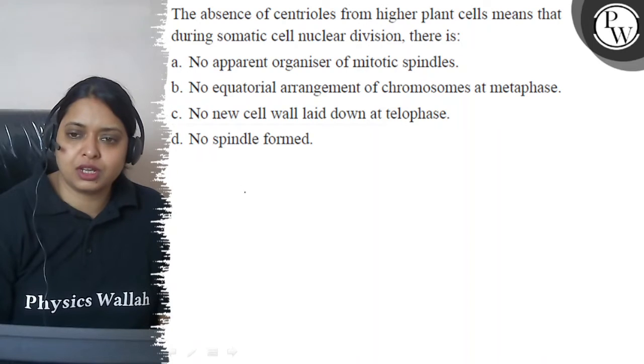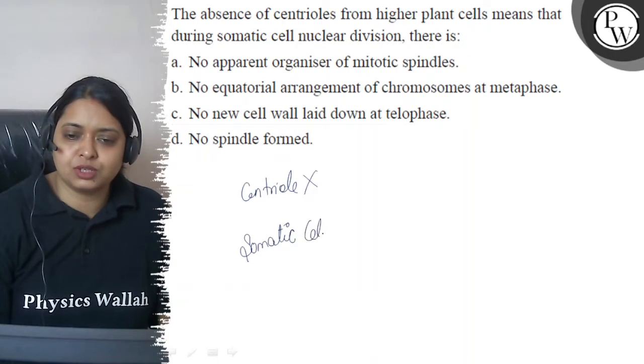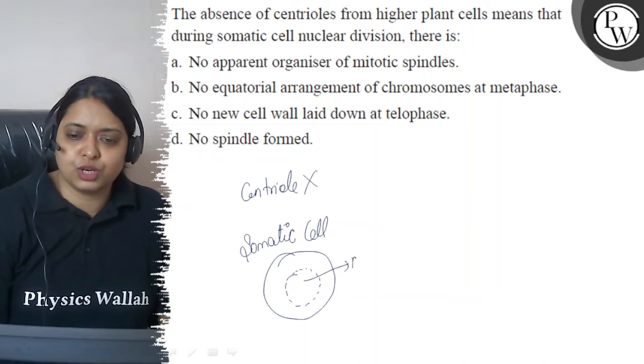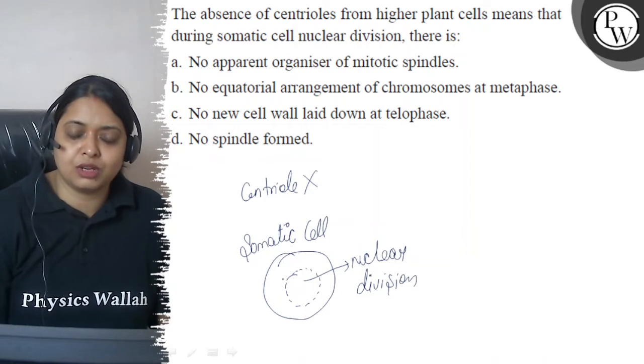The question is asking, in a higher plant cell, centrioles are absent. They have said that they have taken a somatic cell, which is not participating in fertilization. If we don't participate in fertilization, we call it somatic cell. So what happens in this somatic cell during nuclear division? What will happen? Because we know that centrioles are absent here, so how will the event be in it? Let's see the options.